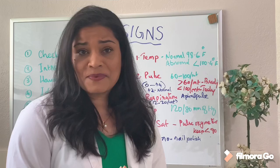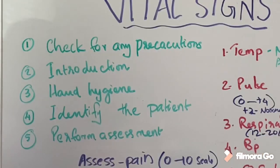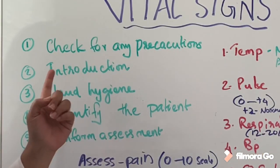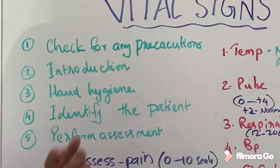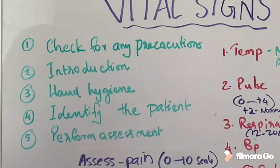Vital signs have five steps. The first step is to check for any precautions. When you go to the patient's room, check on the door — is there any contact isolation or airborne precaution? You have to wear the appropriate PPE according to the precaution.